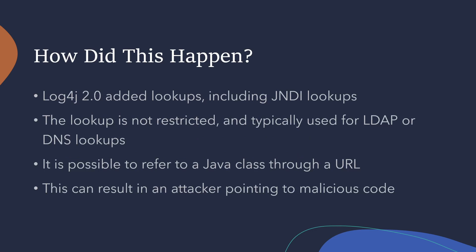So how did this actually happen? You would think that with a logging application, something like this wouldn't be possible. But the reason it is possible is that in log4j 2.0, they added a functionality called lookups — specifically one called JNDI lookups. This lookup wasn't restricted properly, meaning they weren't properly sanitizing user inputs. Usually this is used for LDAP and DNS lookups, but it turns out there's a functionality within it that allows you to refer to a Java class through a URL.